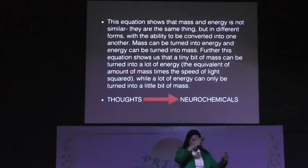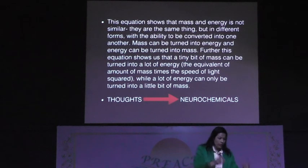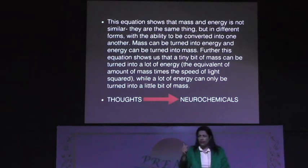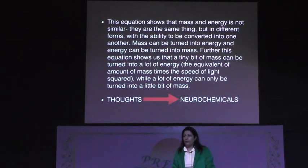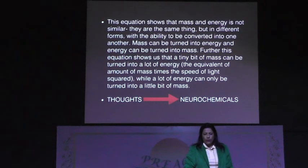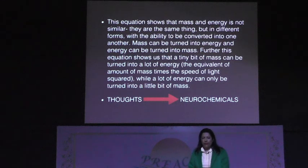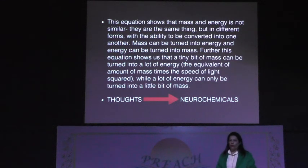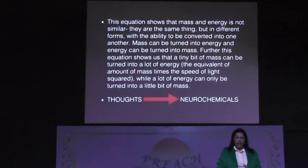So in a matter there is so much energy and so much mass. This equation shows us that a tiny bit of mass can be turned into a lot of energy — the equivalent amount of mass times the speed of light squared.